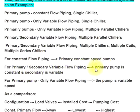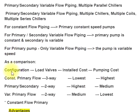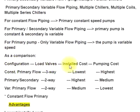Other arrangements include primary constant and secondary variable flow piping, primary pump only with variable flow piping where the pump is variable speed. As a comparison, the configurations are evaluated by load valves, installed cost, and pumping cost.